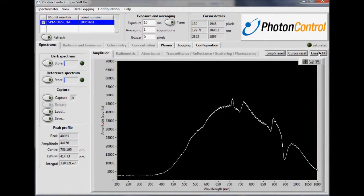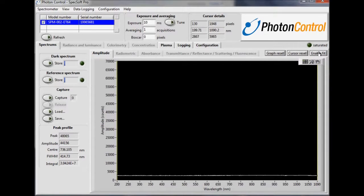Next thing we want to do is collect a dark spectrum. This is done by simply turning off the light source and pressing the dark spectrum button. Now let's turn back on the light source.